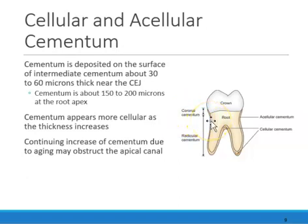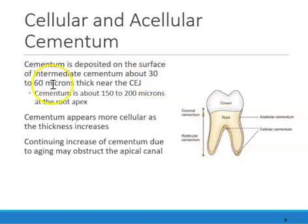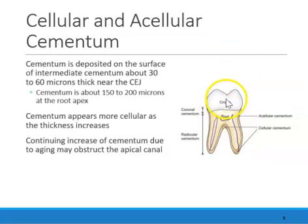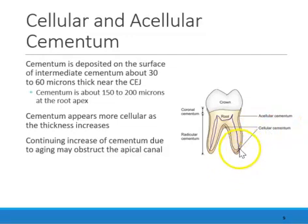Let's look at acellular cementum, which is the coronal one — it is very thin, only 30 to 60 microns. But if we look at the apical part, known as cellular cementum, it's a lot thicker — 150 to 200 microns. If cementum keeps getting deposited at the apical canal due to trauma or constant grinding, cellular cementum builds up and can actually block that apical canal.